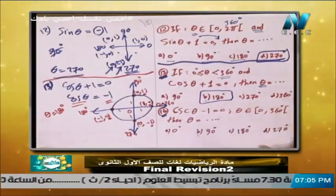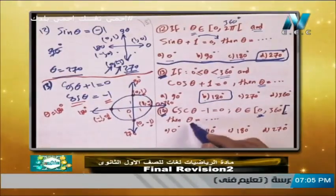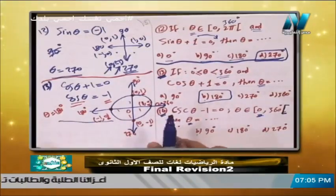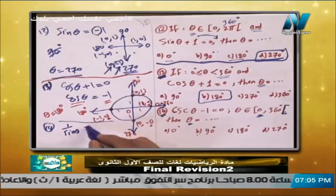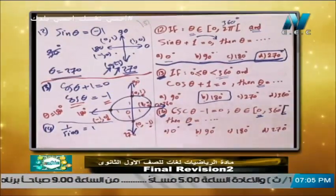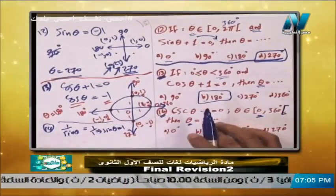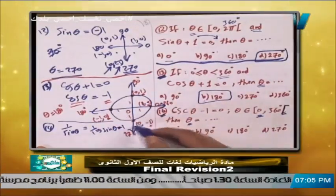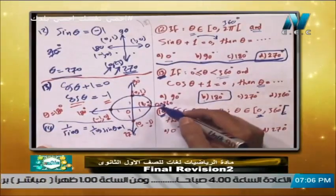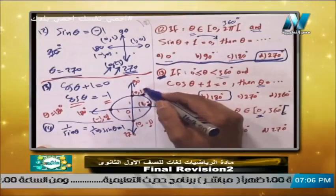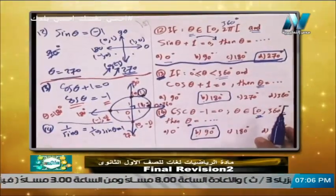Number 14: csc theta minus 1 equals 0, with theta from 0 to 360 open interval. We know that csc theta means 1 over sine theta, which equals 1. Taking the reciprocal, sine theta equals 1. So where does sine theta equal 1? On the unit circle, sine is the second coordinate — it equals 1 at 90°. So theta equals 90°, and the answer is B.